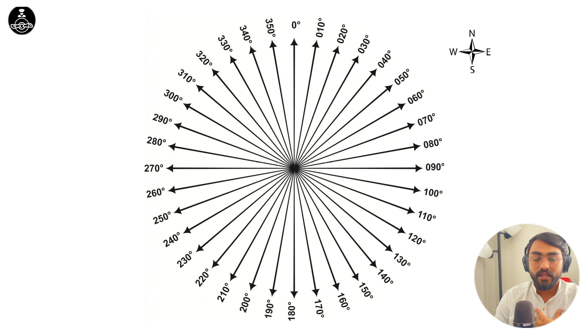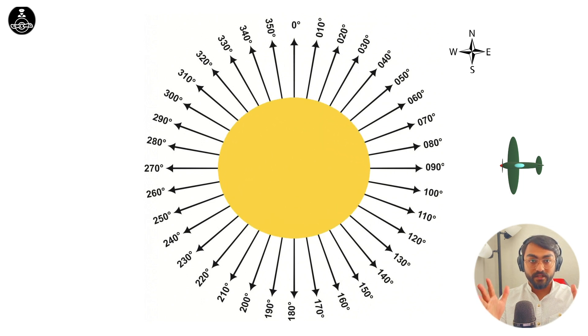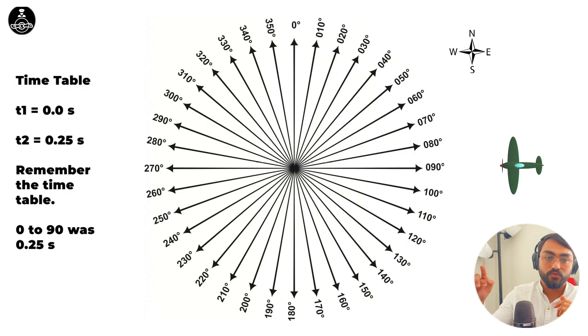station transmits the reference signal, and let's say it is time t equals zero. At t equals zero we receive the reference signal. Then, as we said, it will take about 0.25 seconds for the variable signal to reach 090. When it reaches 090, which is where we are, our aircraft receives the variable signal. The aircraft receivers will process this time difference, also called phase difference, and know exactly where we are because it already